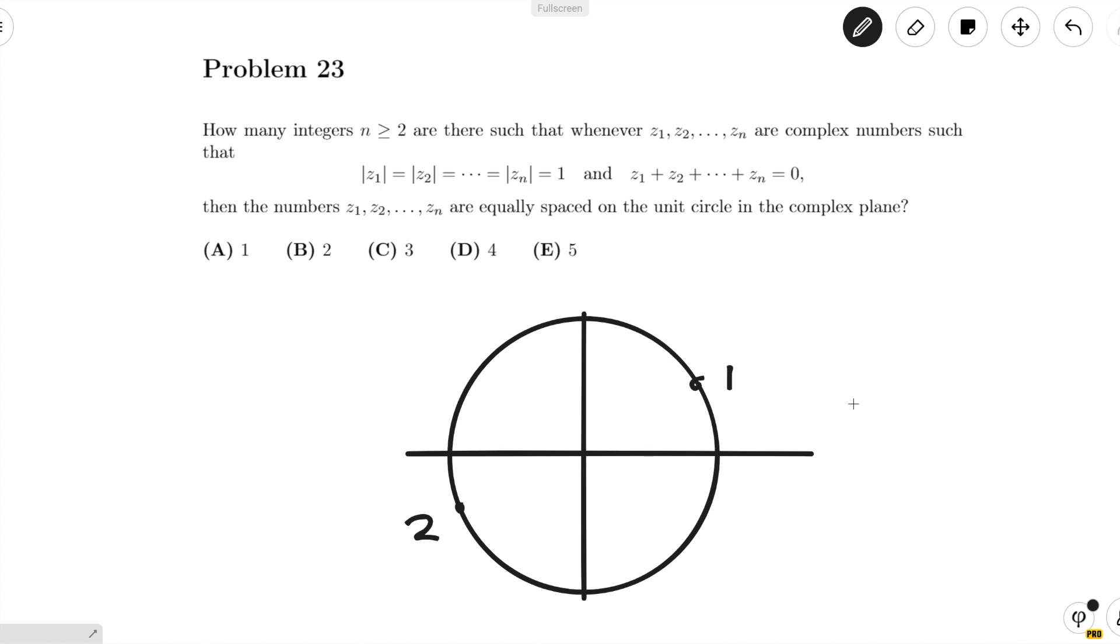And since it's on the opposite side, it's equally spaced out on the unit circle. So basically for z₁, z₂ is uniquely defined. So n equals 2 works.